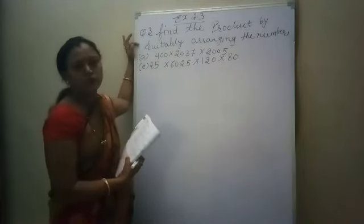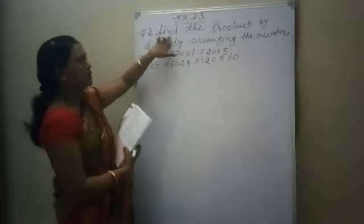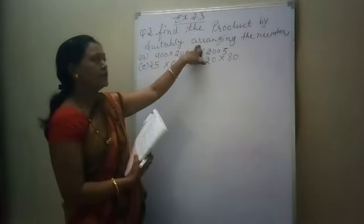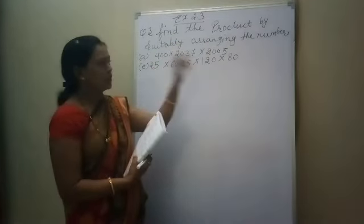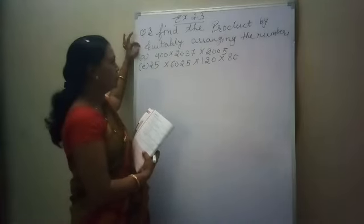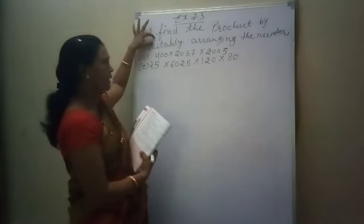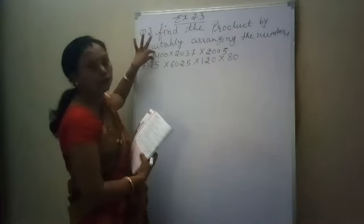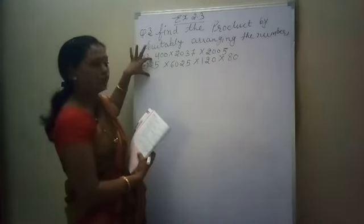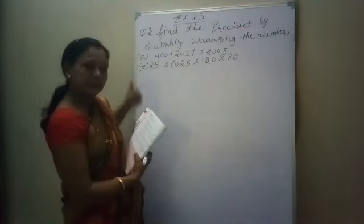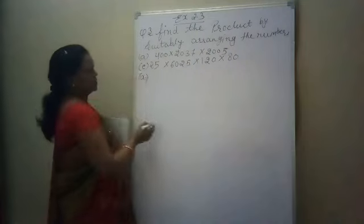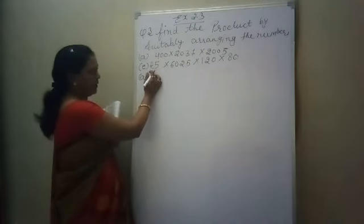Now start with question number 3. Find the product by suitably arranging the numbers. In this question number 3, we will use some arrangement and then find out the multiplication of 3 numbers — multiplication of 3 or more than 3 numbers. So here we will solve 2 questions, that is A part and E part.